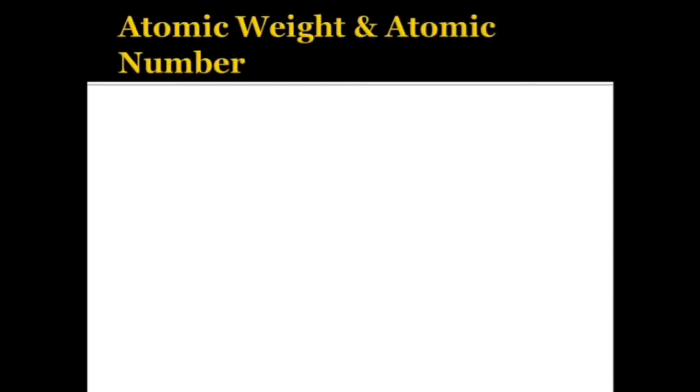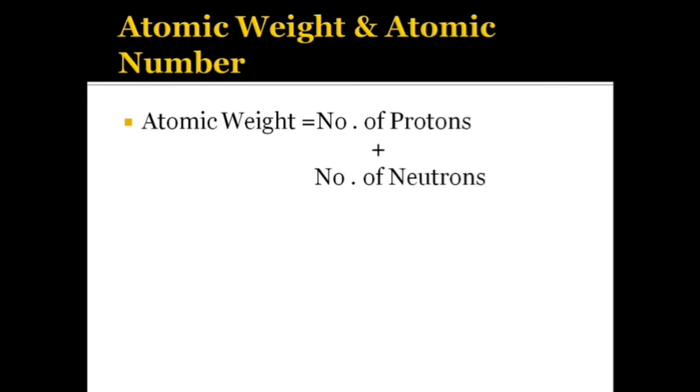Next, we are going to see the difference between atomic weight and atomic number. Atomic weight is the number of protons plus the number of neutrons. The atomic number is the number of electrons or the number of protons.